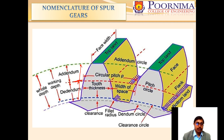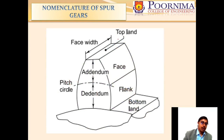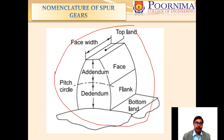The face width is shown, and the surface above is the top land. Looking at a single tooth, the different parts are: above the pitch circle, the distance is known as the addendum. The surface above the pitch circle is known as the face, and the surface below the pitch circle is known as the flank. The space between one tooth and another is the bottom land.